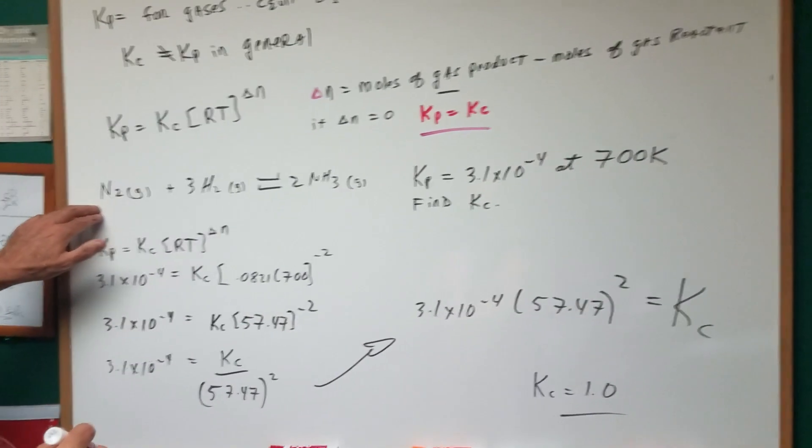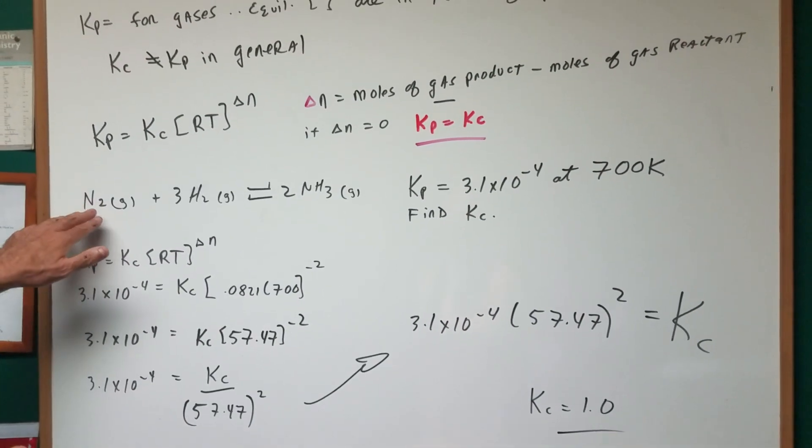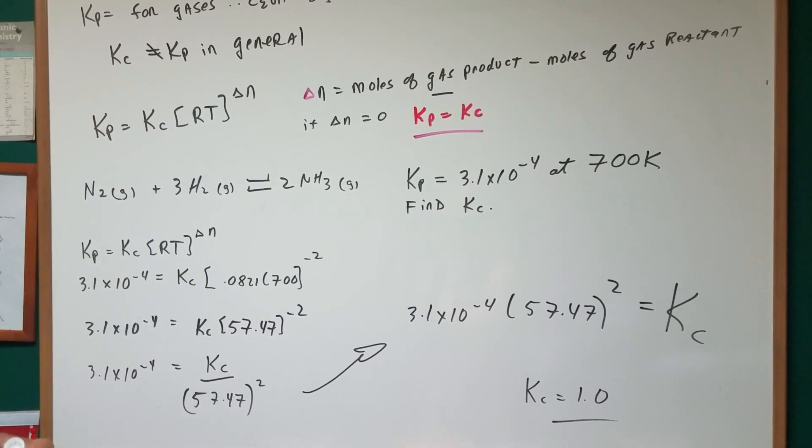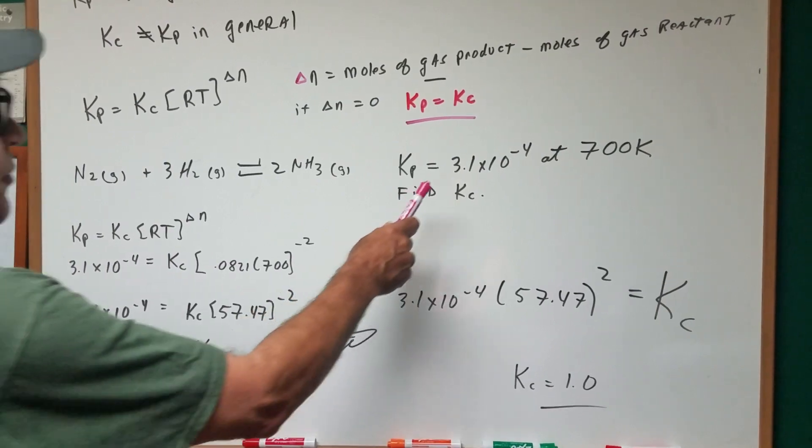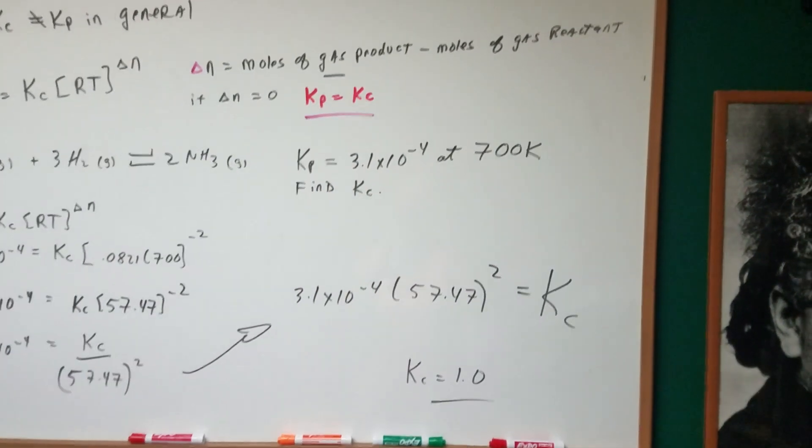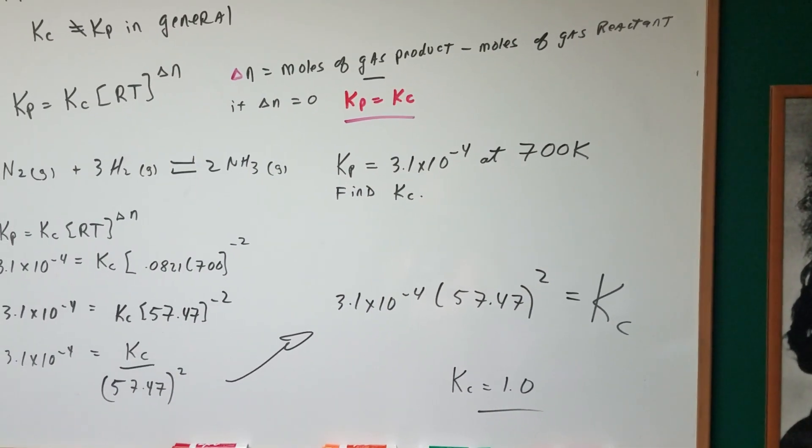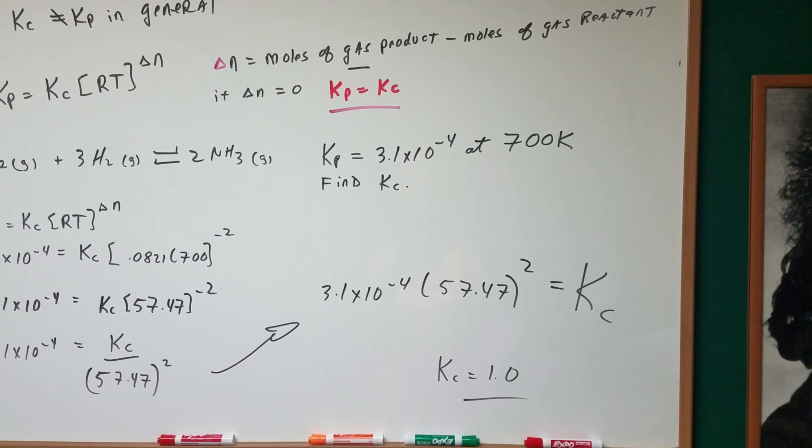Let's do an example using the Haber process. We have nitrogen gas reacting with three moles of hydrogen gas to give two moles of ammonia. The KP at 700 Kelvin was found to be 3.1 times 10 to the minus fourth. Find the KC.